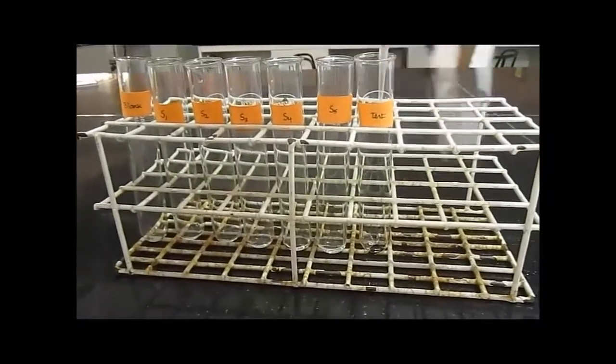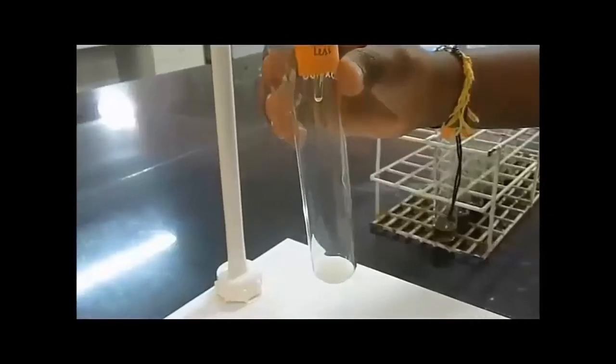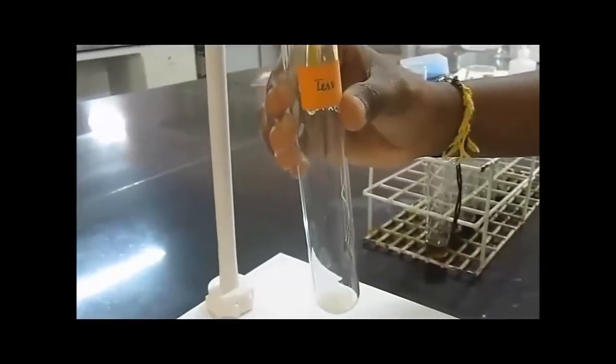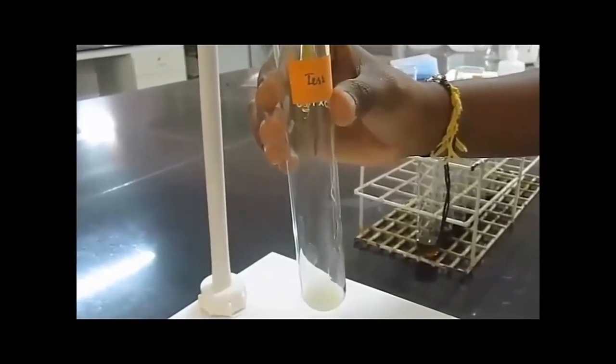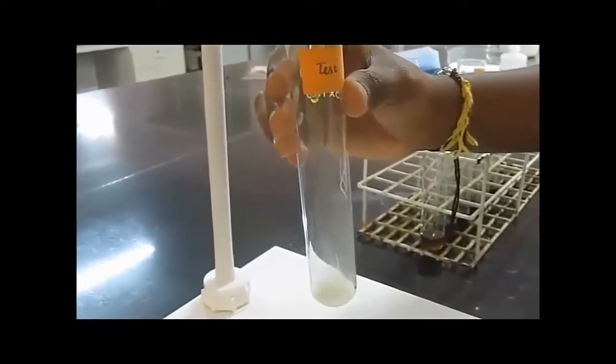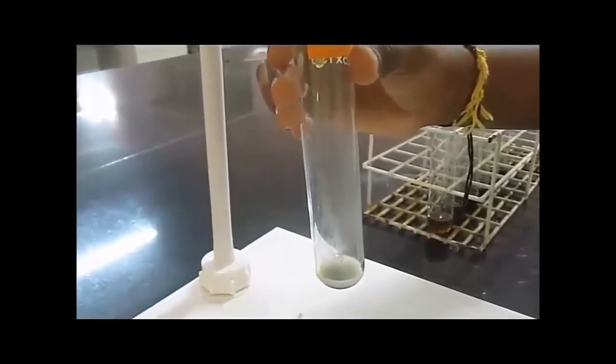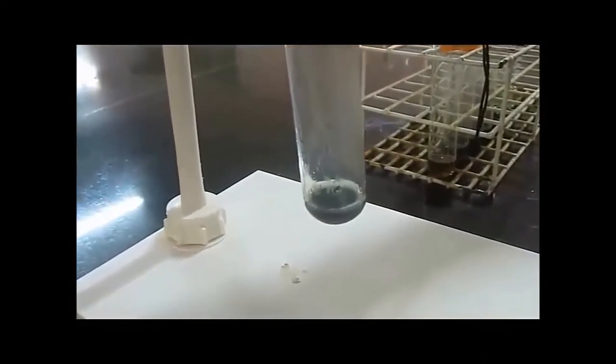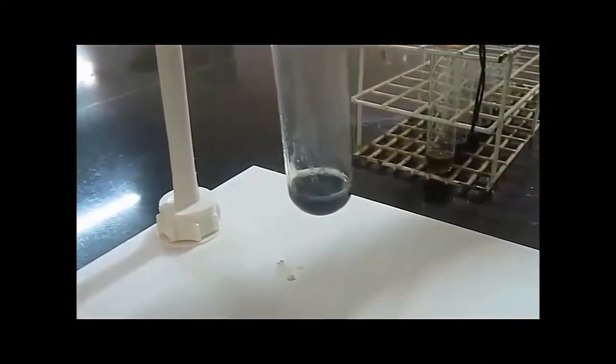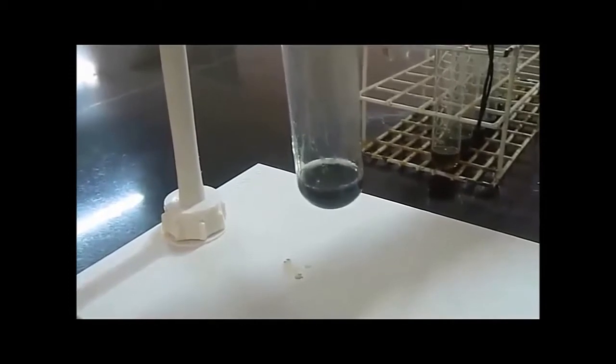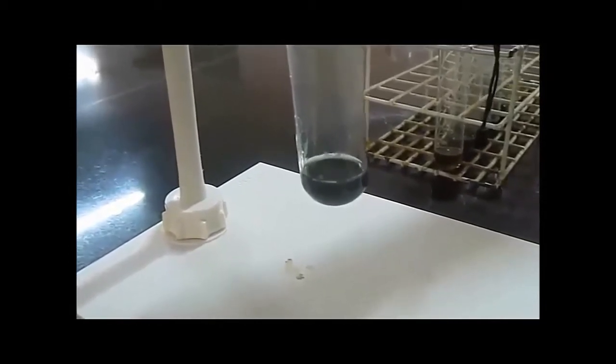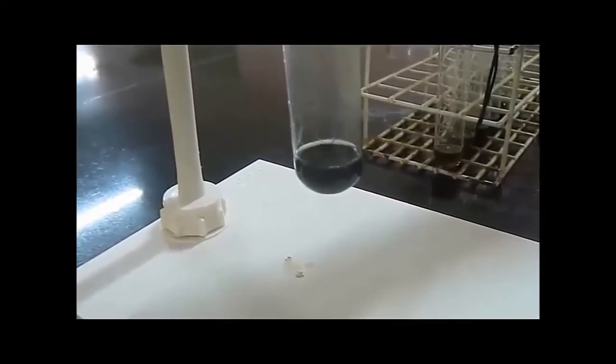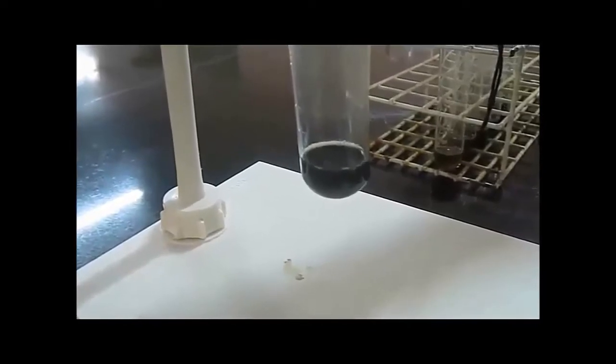The extract is pipetted and added to all the test tubes. Add 4 ml of antron reagent to all the test tubes. This antron reagent is prepared by dissolving 200 mg of antron in 100 ml of ice-cold sulfuric acid.